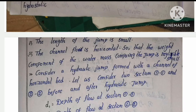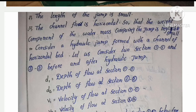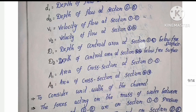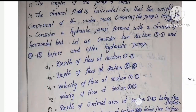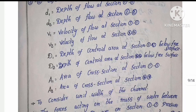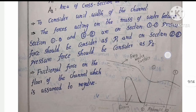Consider the hydraulic jump formed in a channel with a horizontal bed. D1 is the depth of flow at section 1-1; D2 is the depth of flow at section 2-2; V1 is the velocity of flow at section 1-1; V2 is the velocity at section 2-2. D̄1 and D̄2 are the depths of the centroid area below the free surface at sections 1-1 and 2-2 respectively. A1 and A2 are the cross-sectional areas at sections 1-1 and 2-2.